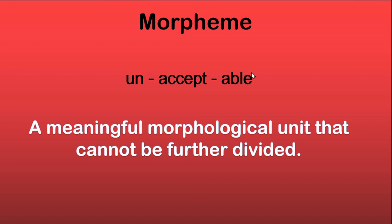We saw that the word 'unacceptable' has three parts: un-, accept, and -able. Un- is a prefix, -able is the suffix, and 'accept' is the root word. Don't confuse -able the suffix with 'able' the independent word — that's a different thing. So in 'unacceptable,' we say that un- is a morpheme, accept is a morpheme, and -able is a morpheme. There are three morphemes.